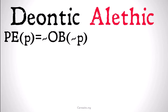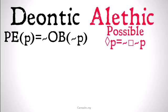Take for example permissibility: 'It's permissible that P' means 'it's not the case that it's obligatory that not P.' And possible: 'It's possible that P' means 'it's not the case that it's necessary that not P.' They may look different because one uses predicates and one uses symbols, but they are in fact the same.